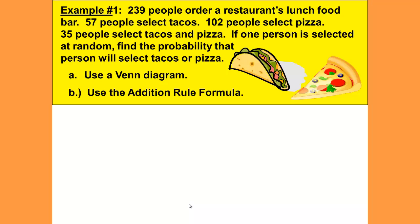We have 239 people order at a restaurant's lunch food bar. 57 people select tacos, 102 people select pizza, 35 people select tacos and pizza. If one person is selected at random, find the probability that the person will select tacos or pizza.